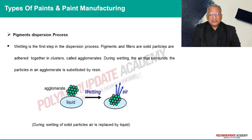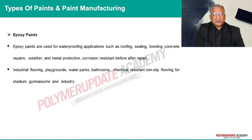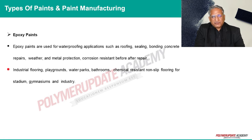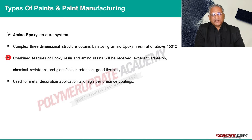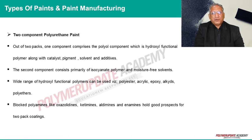The figure shows how air is replaced by wetting of solid particles. Epoxy paints are used for waterproofing applications such as roofing, ceiling bonding, concrete repairs, weather and metal protection, corrosion resistance, industrial flooring, playgrounds, water passages, bathrooms, chemical-resistant non-slip flooring for stadiums, gymnasiums, and industry. An amino-epoxy system produces a complex three-dimensional structure by curing at or above 150°C, combining excellent adhesion, chemical resistance, gloss, color retention, and good flexibility.